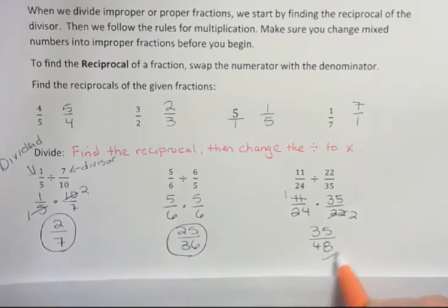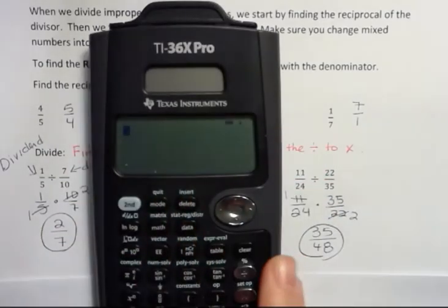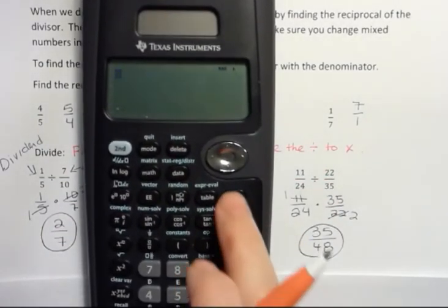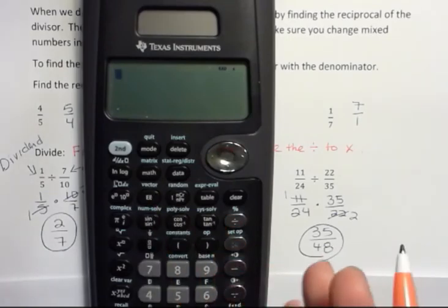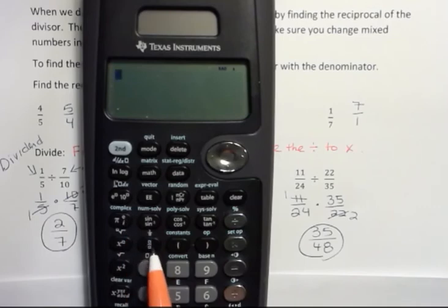What if you got an answer and you weren't sure if it could be reduced or not? You could use your calculator. Whichever calculator you have, you can go onto YouTube and ask somebody how to do this. If you have anything with a fraction button, we're going to have 35, hit that fraction button to make it a fraction, and then over 48. And then I can hit enter. And see how that's still 35, 48? That means it can't be reduced.